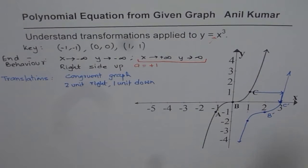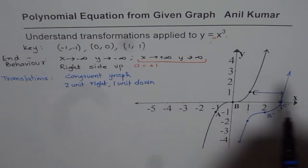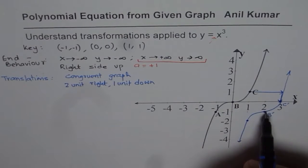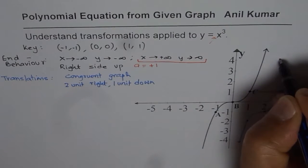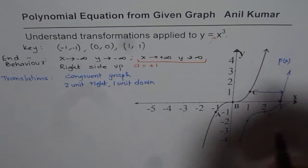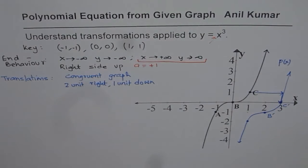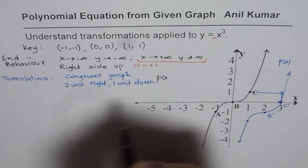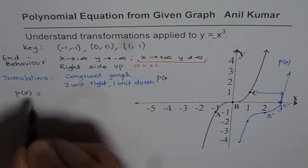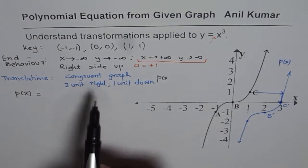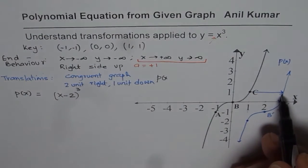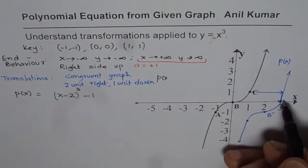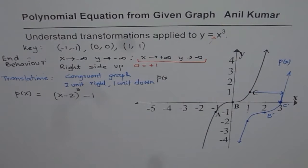Can you write down the equation from this graph? We know all points moved 2 units right and 1 unit down. Therefore, the function p of x equals x minus 2 cubed minus 1. The horizontal translation of 2 units right gives us x minus 2 inside, which makes x zero when x equals 2. And the 1 unit down gives minus 1 outside.